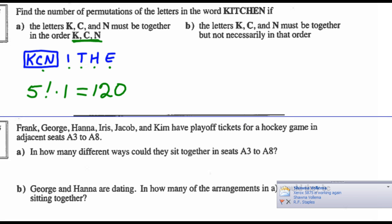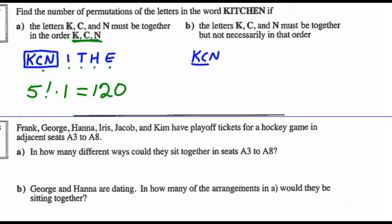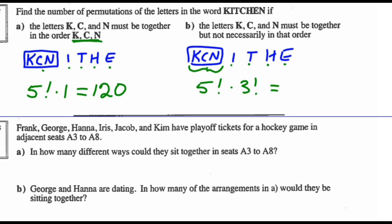Part B: the letters K, C, and N must be together but not necessarily in that order. We still have 5 objects to arrange — the group KCN plus I, T, H, E — so that's 5 factorial. But now inside the group of K, C, N, there are 3 objects that can be arranged 3 factorial ways: KCN, KNC, CKN, CNK, NCK, NKC, and so on. So 5 factorial × 3 factorial = 120 × 6 = 720 arrangements.